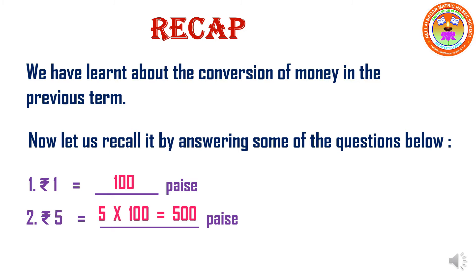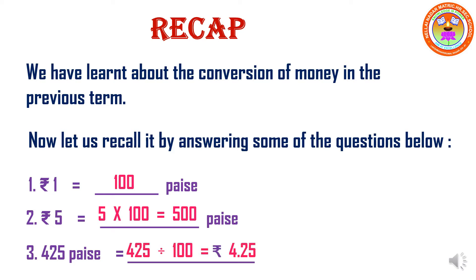Now, suppose we have been given 425 paise and this paise has to be converted into rupees. For this, we need to divide 425 by 100. So if we divide 425 by 100, what do we get? 4 rupees and 25 paise. So this is all we have learnt in the previous term — just to recall the topic which we had learnt previously. Understood, children?